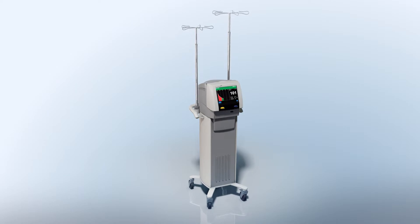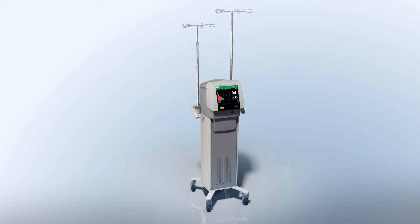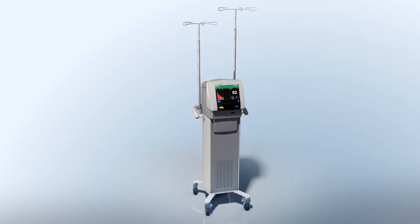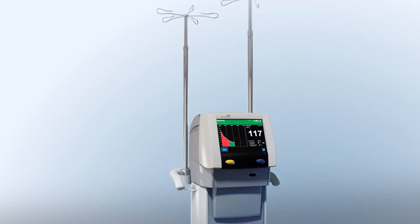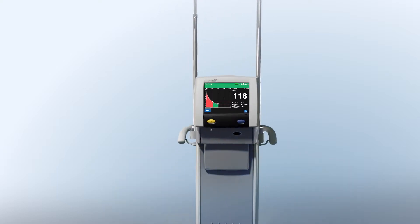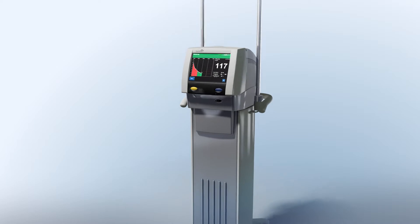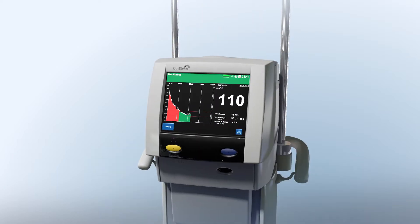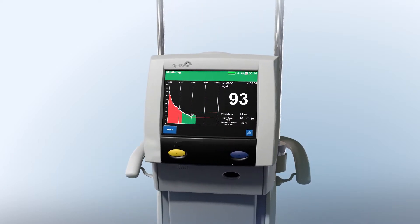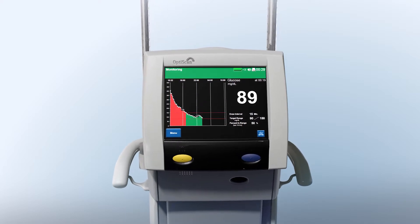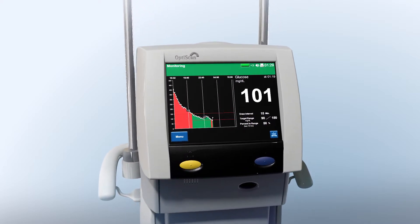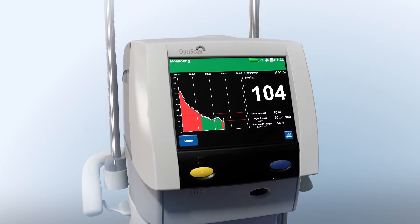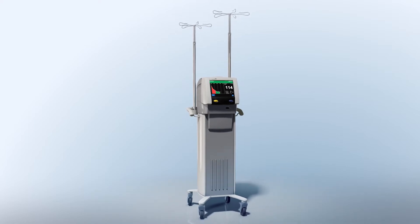OptiScan Biomedical has developed an automated bedside blood monitoring platform for use in intensive care units. The OptiScanner 5000 represents the first step in the development of this platform. The system automatically measures and trends plasma-based glucose levels to enable early detection of hypoglycemia, hyperglycemia, or glycemic variability.